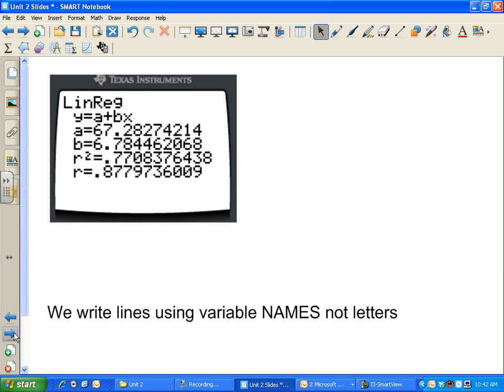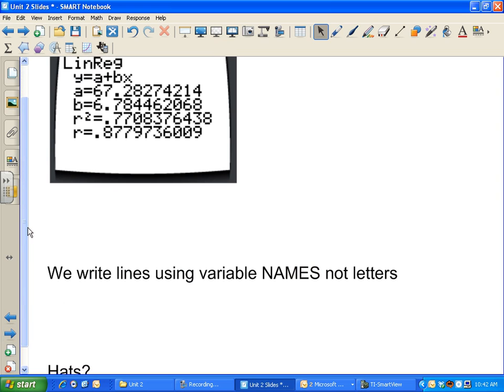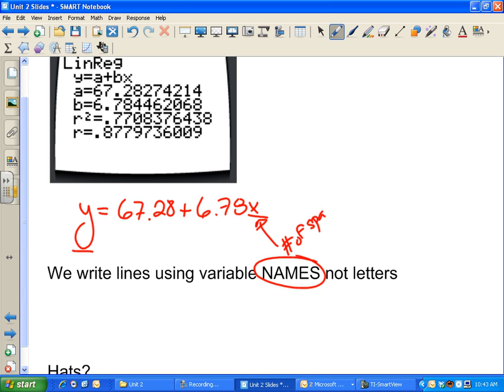All right. So one last thing I want to mention about the line is the way I wrote it before is actually not accurate. I wrote y equals 67.28 plus 6.78x. That's great in algebra class, but we're not in algebra class anymore. We're in stats class. And in stats, we use variable names and not letters. If I looked at that, I have no idea what y and x are. So I'm going to actually fill in y and x with their name. So just to refresh your memory, we might go back to the beginning of chapter 7 where we defined that x was our explanatory variable. This was the number of spaces. And y was the cost.